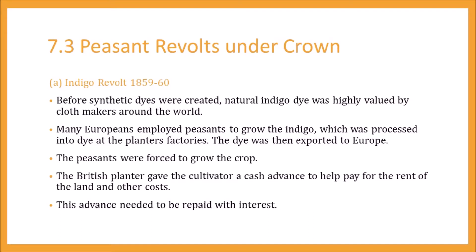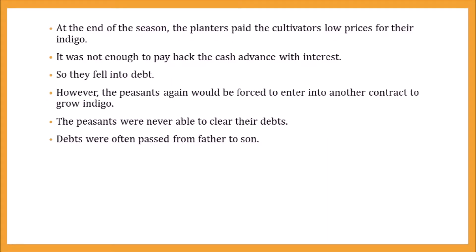The peasants in India were forced to grow the indigo crop. The British planters gave the peasants a cash advance which helped them to pay for land rent and other purposes. The British insisted that peasants repay this advance money after cultivation, along with interest. At the end of the season, the planters paid very little to the peasants — not enough to repay their debt and interest. So the debt burden of the peasants increased.